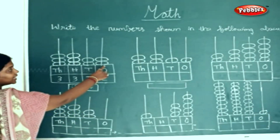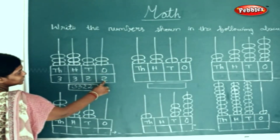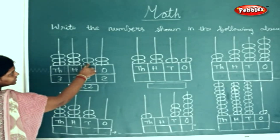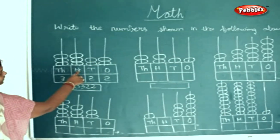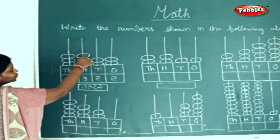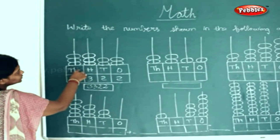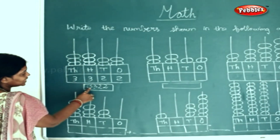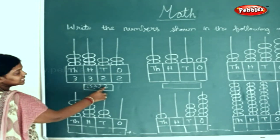How many beads do we have in the ones place? Two beads. How many beads in the tens place? Two beads. How many beads in the hundreds place? One, two, three beads. How many in the thousands place? One, two, and three. So this is written as 3,322.